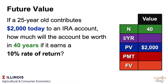If it earns a 10% rate of return, we put 10 for I. This question does not appear to be adding additional funds to the IRA, so we would say zero as payment. Now we have four variables: we know N, we know I, we know present value, we know payment — and we can have our calculator solve for future value.